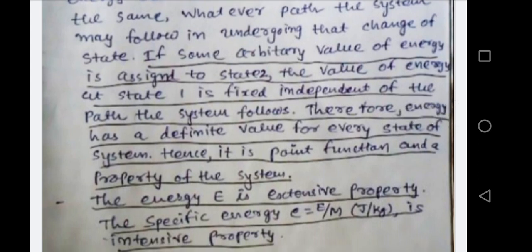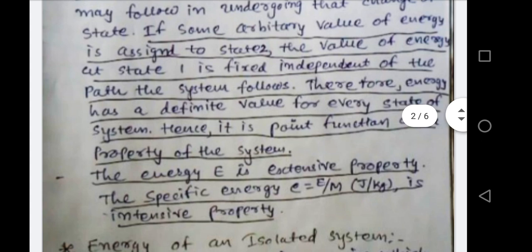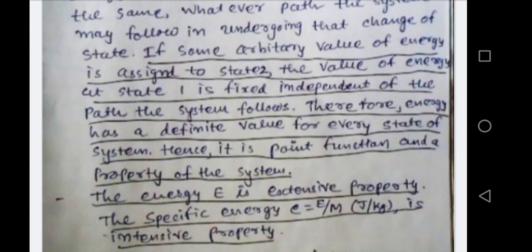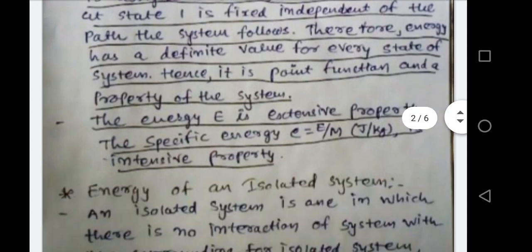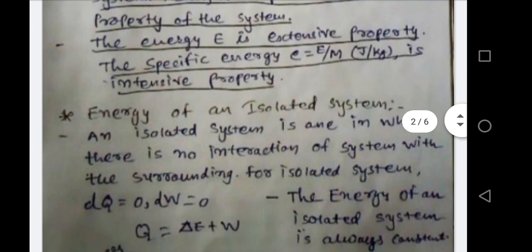Energy E is an extensive property. Specific energy — small e, meaning energy per unit mass, capital E divided by m — is an intensive property. Intensive property means independent of mass; extensive property depends on mass. So total internal energy capital E is the extensive property, but specific internal energy (energy per unit mass) is intensive property. We are now discussing the energy of an isolated system, which is the same as internal energy of the isolated system.